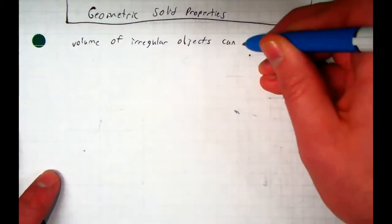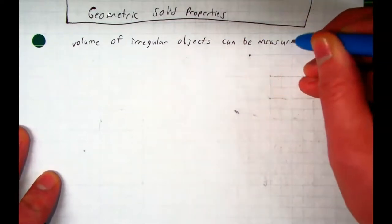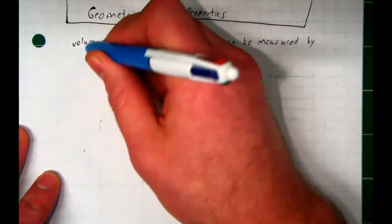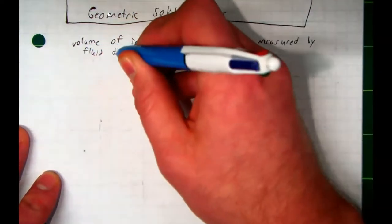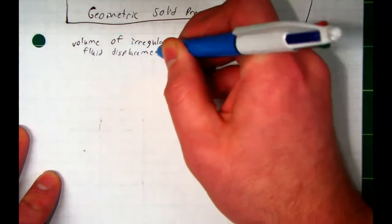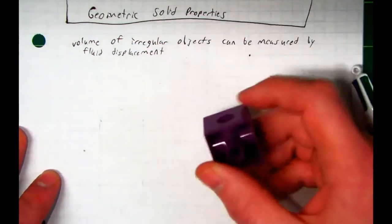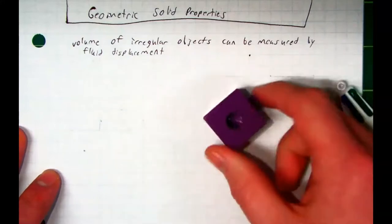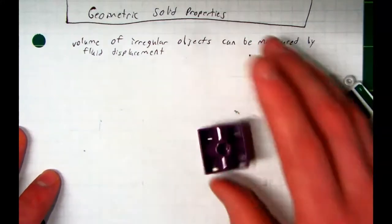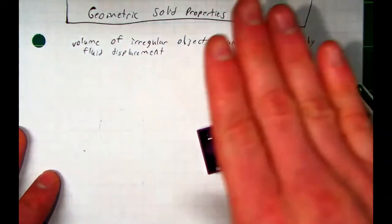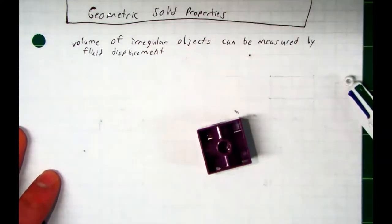But we call this fluid displacement. So we would say can be measured by fluid displacement. So what I mean is if I drop this inch cube into a cup of water, and assuming it didn't float and it sank to the bottom, the water level would rise a little bit. The question is how much?